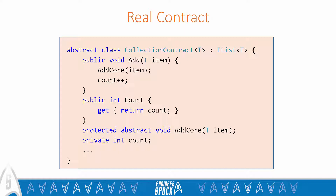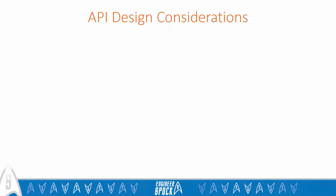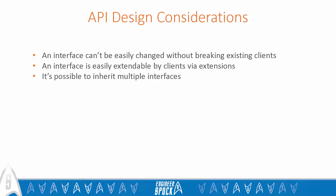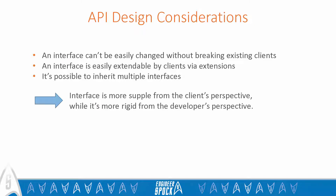Let's consider the difference between an abstract class and an interface from the API design point of view. Interfaces are made of stone — they can't be easily changed without breaking existing clients. At the same time, interfaces are easily extendable by clients via extension methods. If a client wants to implement an interface on a class which already inherits from another class, they can easily do that. A client couldn't do that with an abstract class, since multiple inheritance in C# is not supported. So in the end, an interface is more supple from the client's perspective — any class can implement as many interfaces as it wants. Unfortunately, an interface is more rigid from the developer's perspective: it cannot be easily changed and it doesn't support reusability.